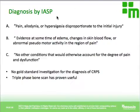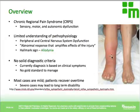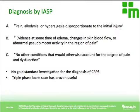Both allodynia and hyperalgesia are used as diagnostic criteria for CRPS. Additional criteria include evidence of edema or swelling, changes in skin color — such as the reddish skin we saw earlier — and abnormal sudomotor activity in the region of pain. There should be no other conditions that would account for the degree of pain, making CRPS somewhat a diagnosis of exclusion. There is no gold standard investigation, but the triple-phase bone scan has proven useful.